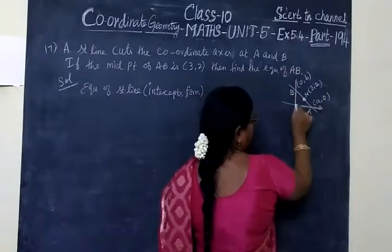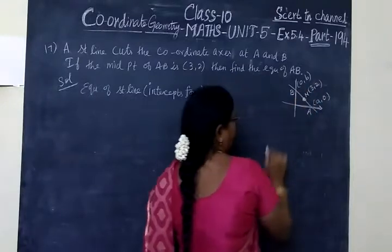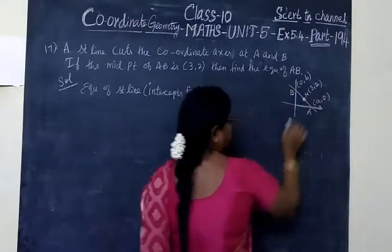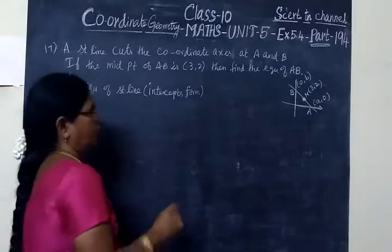That is the point A. Then the point B is on the y-axis. The midpoint is given as (3, 2).